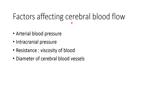Factors affecting cerebral blood flow: first, arterial blood pressure — it is the pressure head with which blood enters the cerebral circulation. Cerebral blood flow is mainly auto-regulated within the mean blood pressure range of 65 to 140 mmHg. The second factor is intracranial pressure or perfusion pressure — perfusion pressure equals arterial pressure minus venous pressure, and is the pressure exerted on vessels inside the brain.